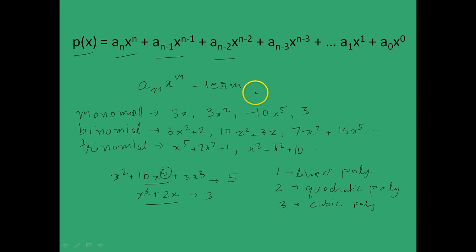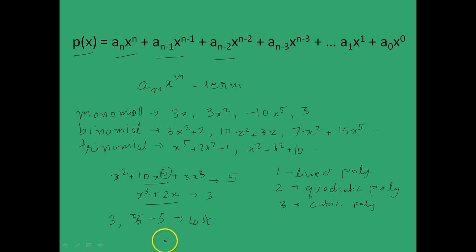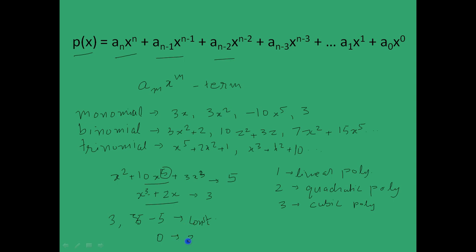Some other notations to keep in mind are those of the zero polynomial and the constant polynomial. A whole number itself can be called a polynomial — for example, 3 or minus 5 in itself is a polynomial, which can be thought of as a₀ times x to the power 0. These polynomials are called constant polynomials. A special case is the zero polynomial, that is the whole number 0 itself, wherein all coefficients a_n down to a₀ are equal to 0.